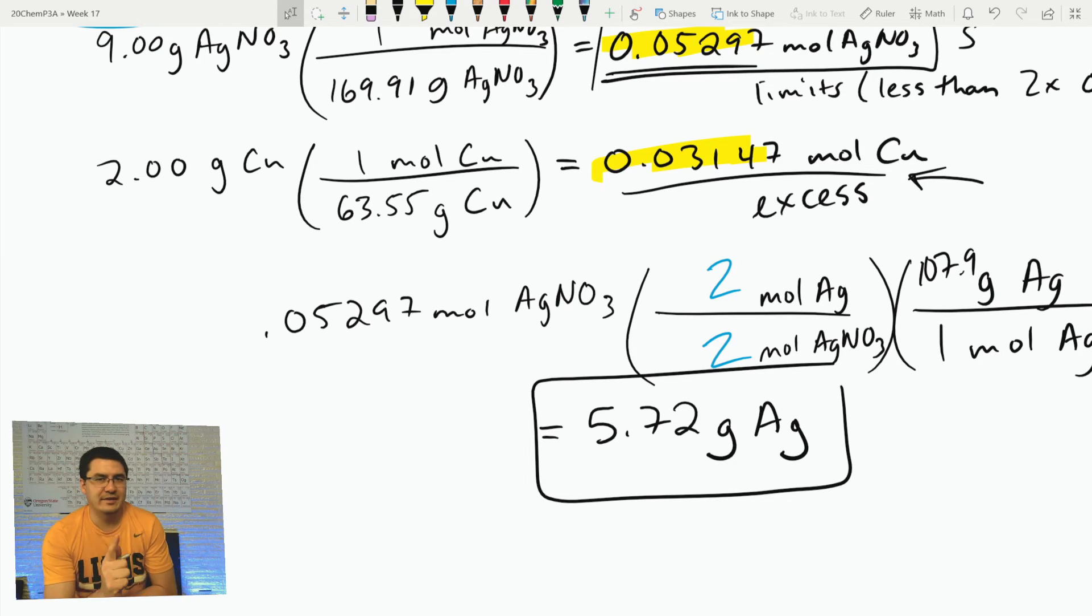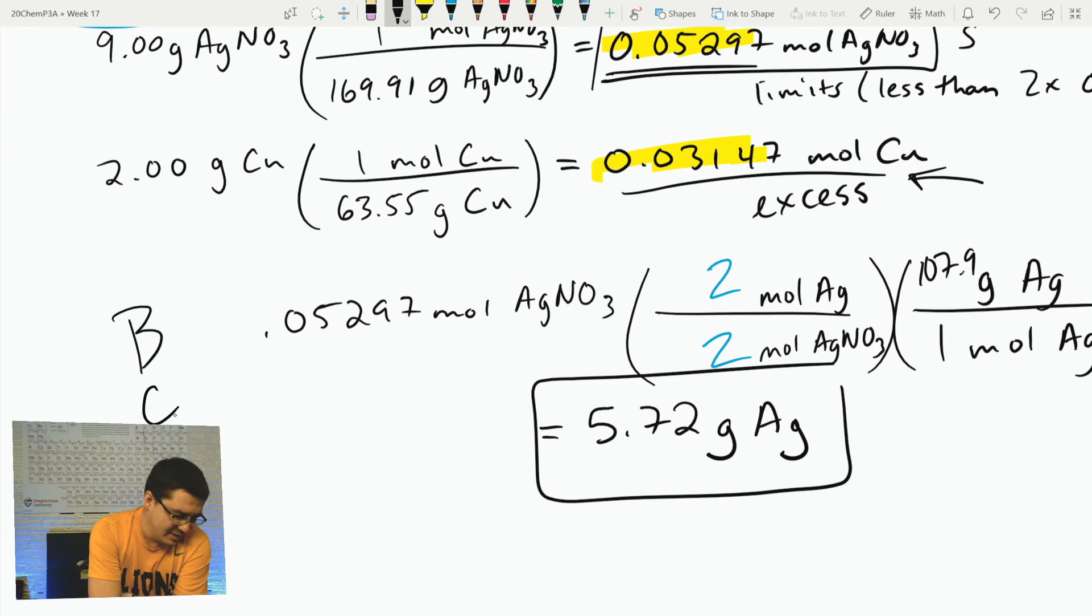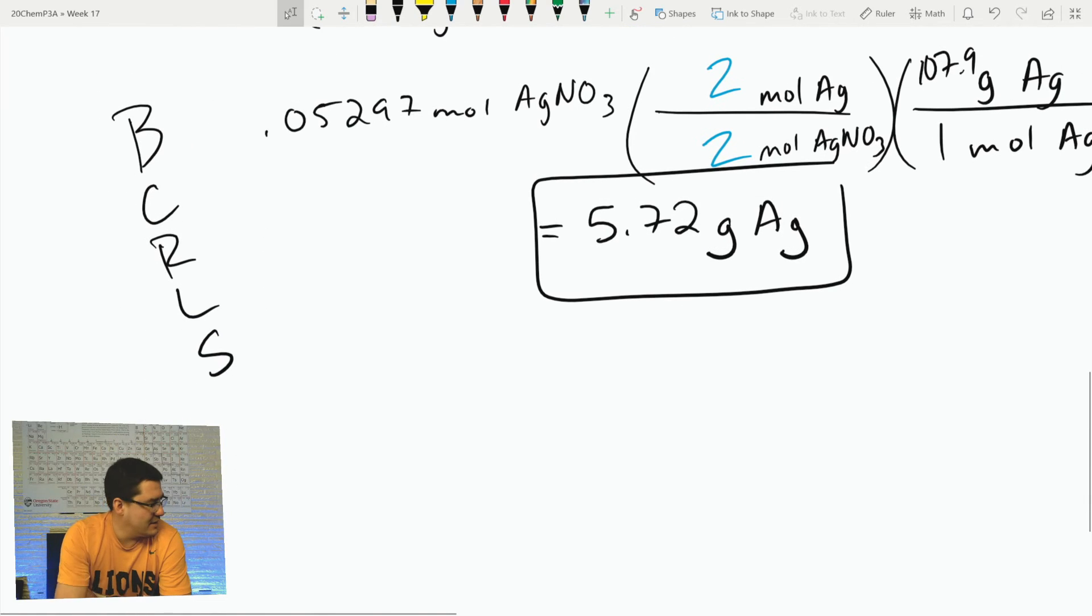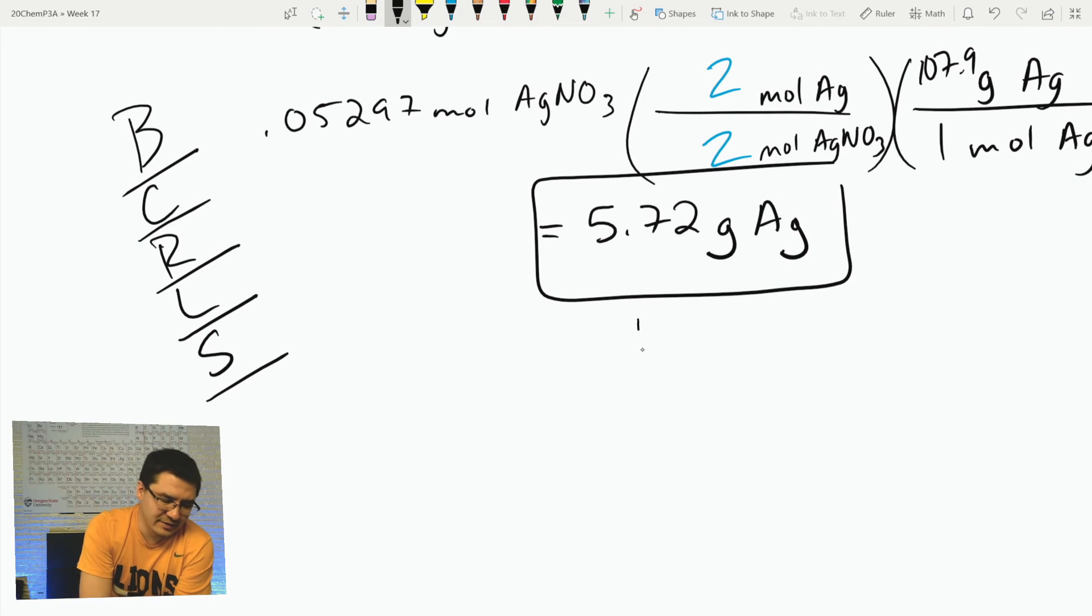One more thing I want to tack on here - I should just reinforce this: B CURLS. Balance, Convert, check your Ratio, find the Limiting reactant, and Solve. Bicep curls, B CURLS. Go through those five steps, you should be good to go. Now I want to throw in that there is something called a yield, and this is our theoretical yield.